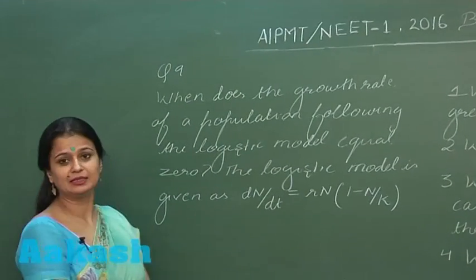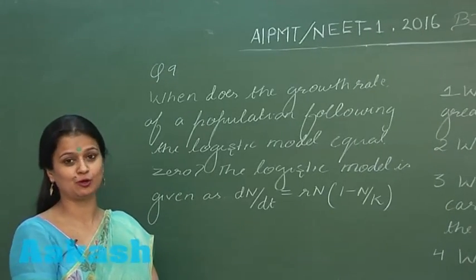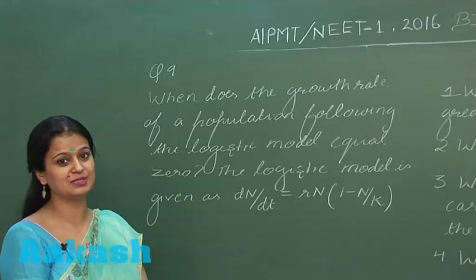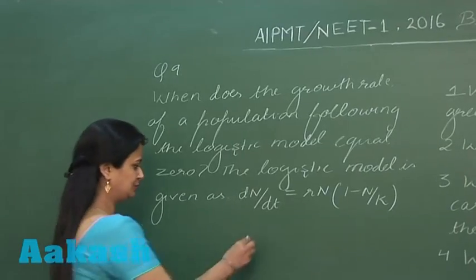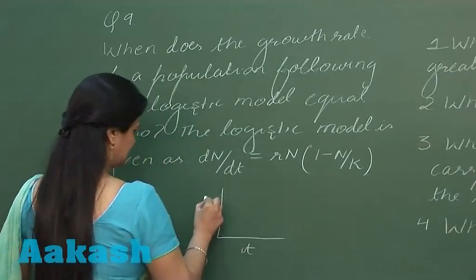This is question number nine regarding the logistic growth curve. We have to look for the option when the growth rate becomes zero. On one side of the graph I'm showing time, and here...